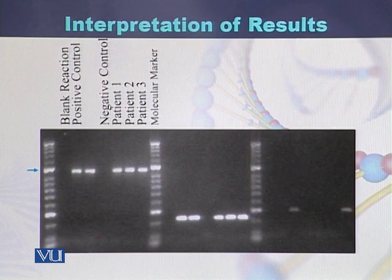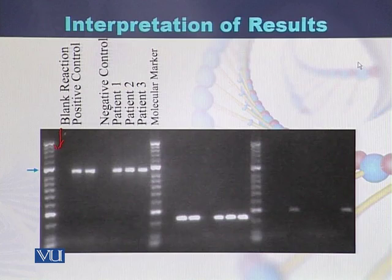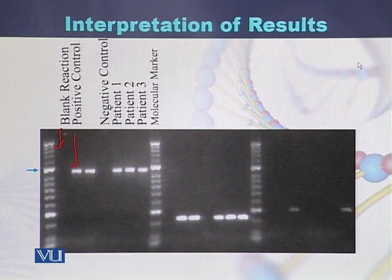Here is the diagram. We can see the results of the PCR reaction. This is the blank reaction, and we can see that nothing has been amplified — it is empty. The next lane is the positive control, and in this well there is amplification of the DNA.